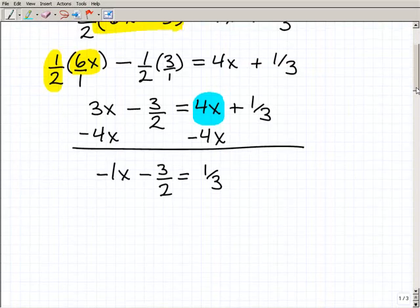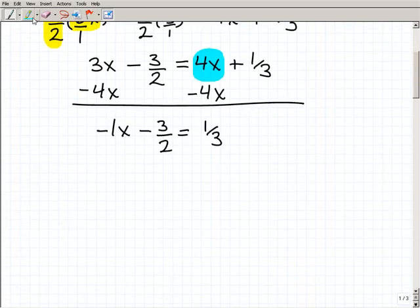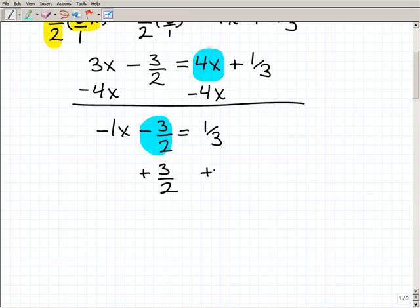All right. So we're really close to solving for x. Now, the next thing I need to do is to get this number, this negative 3 halves, over to the right-hand side of the equation. So I'm going to add 3 halves to both sides of the equation. So that gives me negative 1x equals.